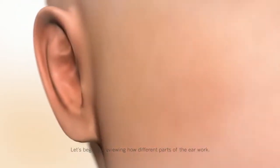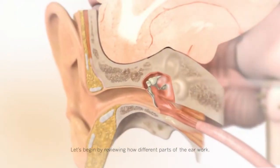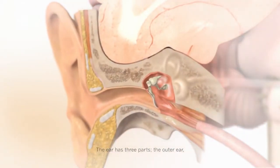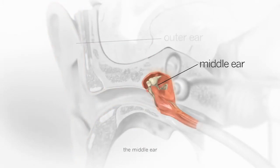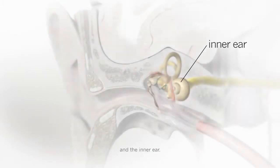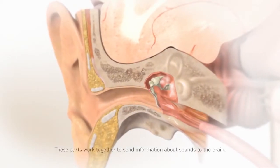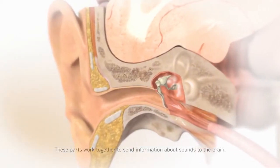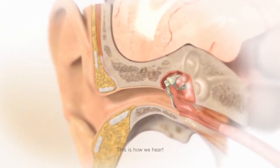Let's begin by reviewing how different parts of the ear work. The ear has three parts: the outer ear, the middle ear, and the inner ear. These parts work together to send information about sounds to the brain. This is how we hear.